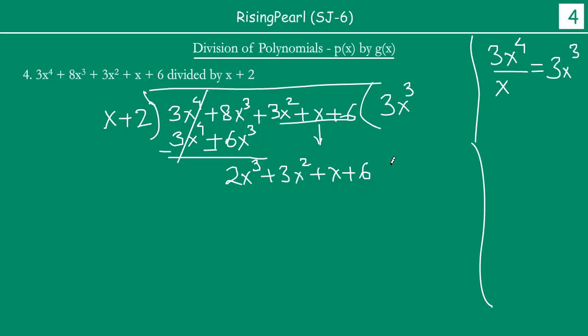Now in this new dividend, first term is 2x cube. So we have 2x cube divided by first term of our divisor is x. So this will give you 2x cube divided by x will be x square. So our second term is plus 2x square. Now this plus 2x square, multiply by both the terms. So 2x square times x will be 2x cube. 2x square times 2 is plus 4x square. 4x square.